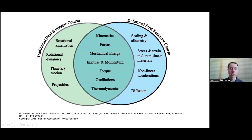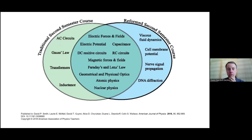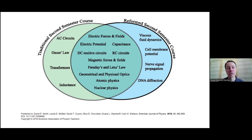Here's another way of showing the same information — a Venn diagram showing which topics were added, eliminated, or included in both semesters. For the second semester course, we actually start the sequence with fluids, which becomes a nice way to lead into DC circuits, because 'flow in equals flow out' applies to both fluids and electrical current. The continuity equation versus the junction rule are the same idea, so that turns out to be a nice introduction.